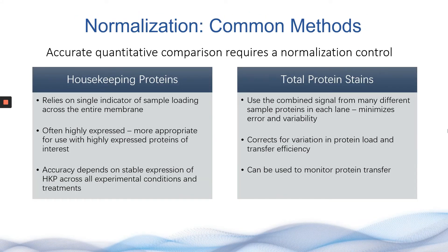When it comes to normalization, researchers usually use one of two commonly used methods: housekeeping proteins or total protein stains. Housekeeping proteins look at the signal intensity of a single protein. These proteins are highly expressed and usually include actin, GAPDH, or tubulin. Furthermore, it is believed that these proteins are not changed with experimental conditions.